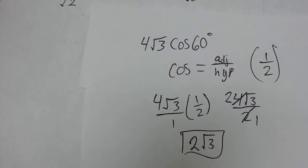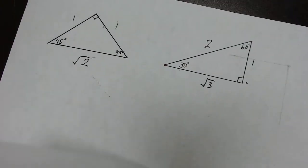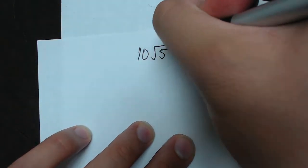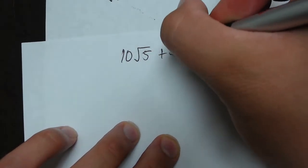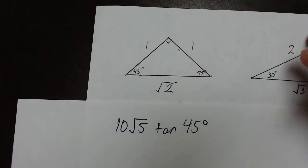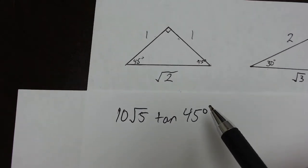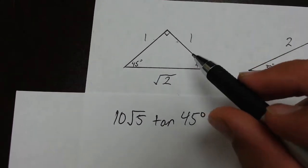This is a pretty short lesson, so I'll go ahead and do one more example. We want to find the answer to 10 times the square root of 5 times the tangent of 45 degrees. So for that, we're going to use our 45, 45, 90 reference triangle. So 1, 1, root 2.